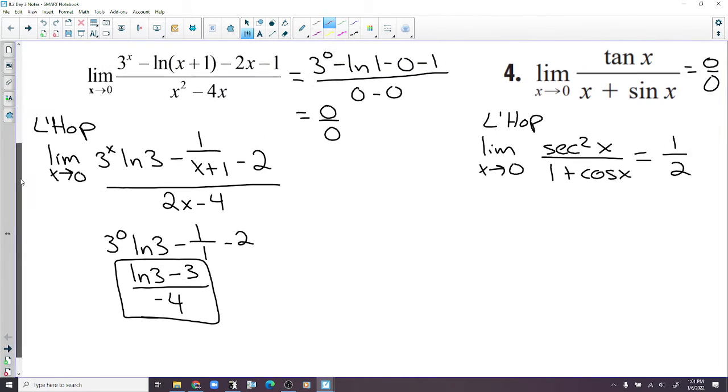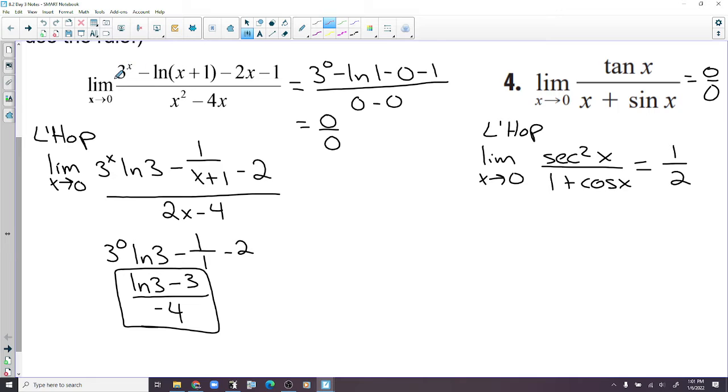Now we're just taking the derivative of all this. The derivative of 3 to the x is 3 to the x natural log of 3. We have 1 over x plus 1, derivative is negative 2. 2x minus 4, there's the derivative. When we plug 0 in here, we get negative 4 in the denominator. 3 to the 0 is 1, natural log of 3 minus 1 minus 2, so minus 1 minus 2, there's your negative 3. And 3 to the 0 is 1.